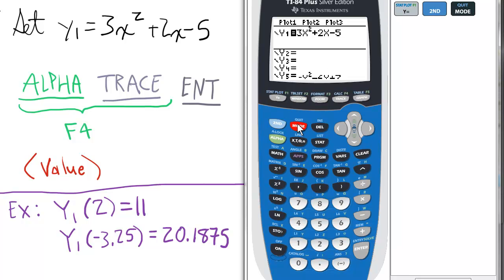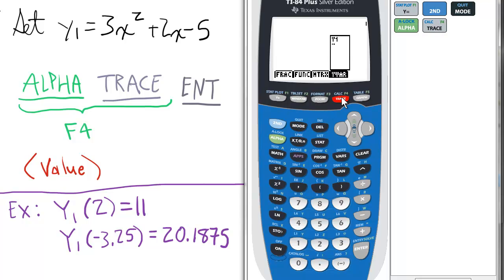Then we quit to the home screen. From there, we press ALPHA and TRACE for the F4 function. Since we want the Y1 function, we press ENTER. Now in parentheses, we select the value for x we want to evaluate.